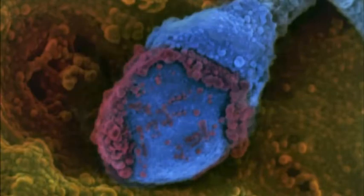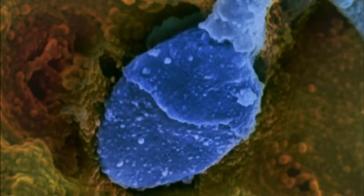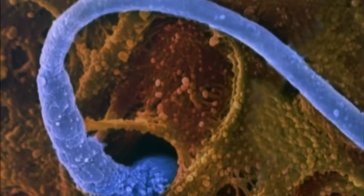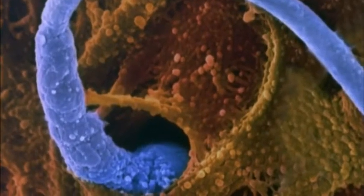It sheds its outer coating, releasing powerful enzymes that dissolve a hole in the zona, allowing the sperm to push its way through.